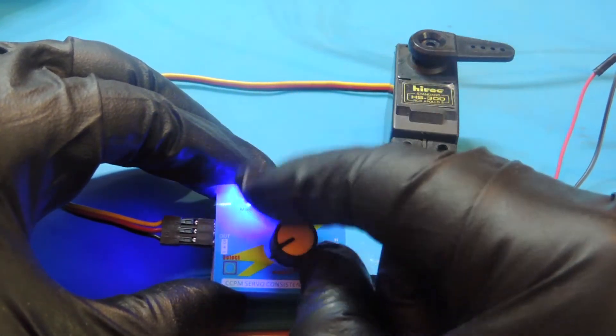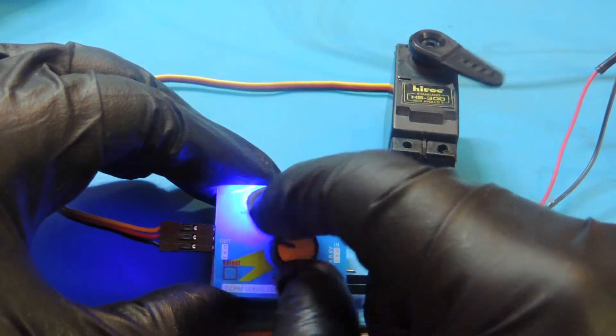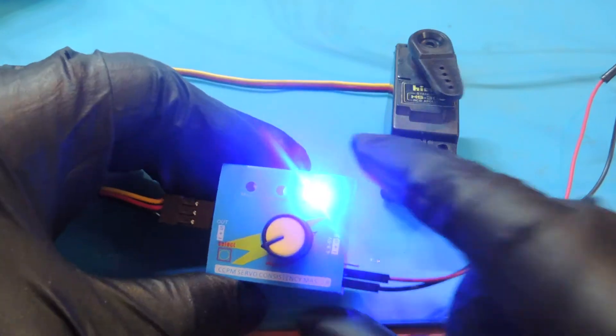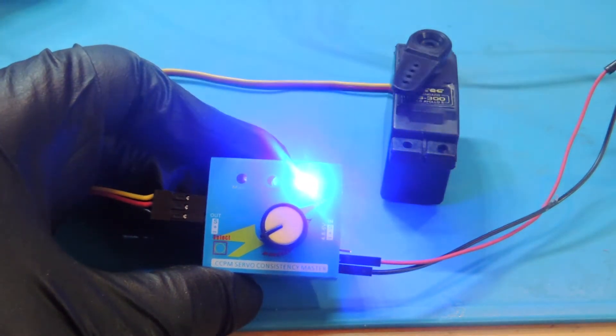The servo tester has its manual function but also an automatic function we can access here on the left-hand side of the board.